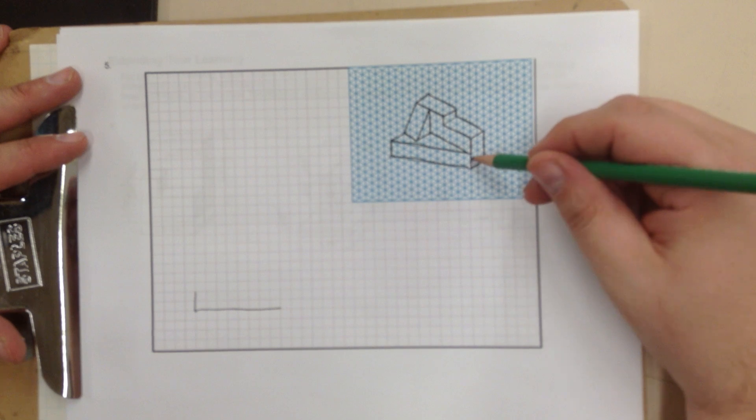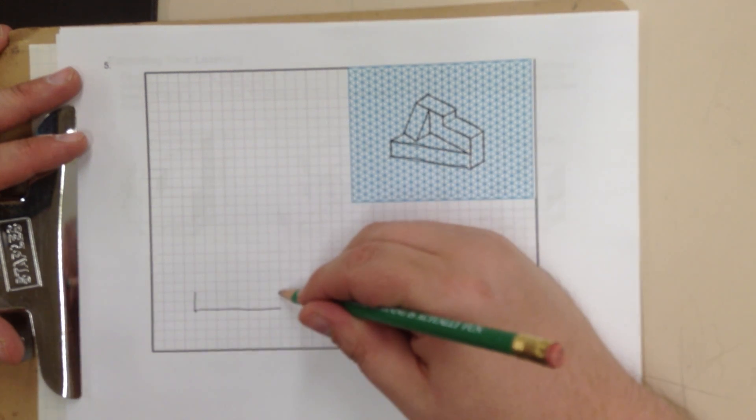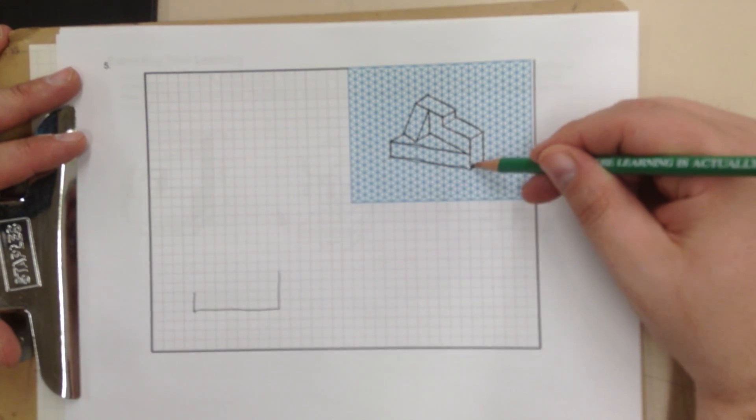If I look at over here, it is 1, 2, 3, 4 high. 1, 2, 3, 4 high. That corresponds to this edge right here.